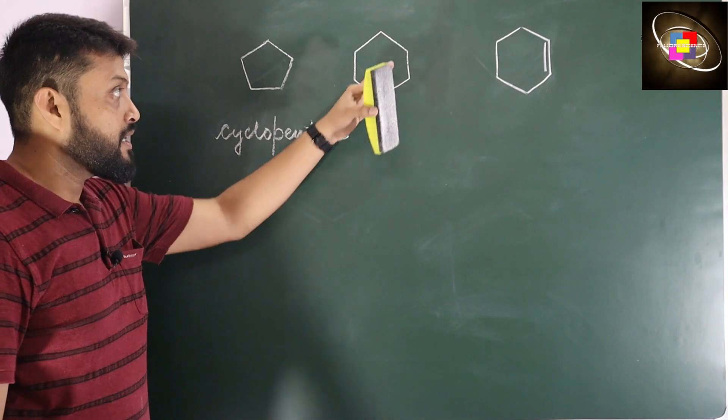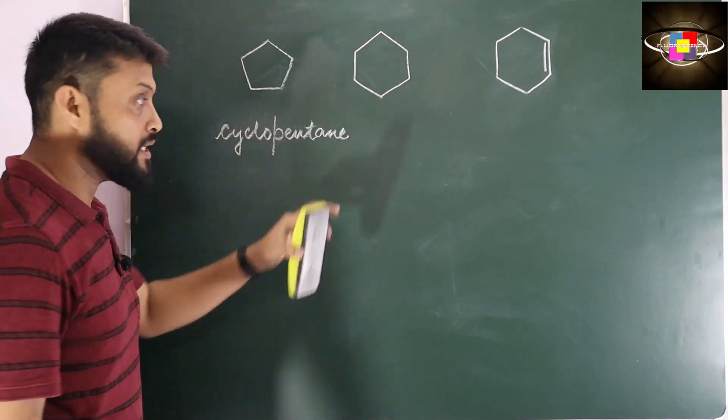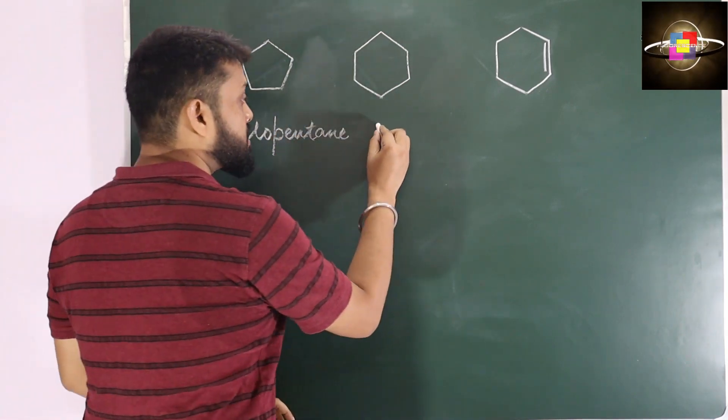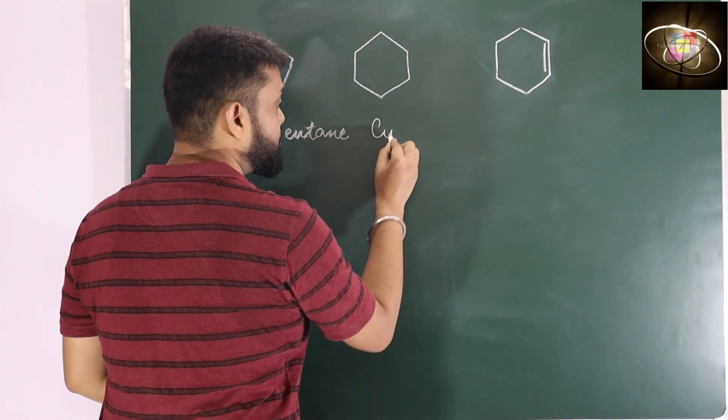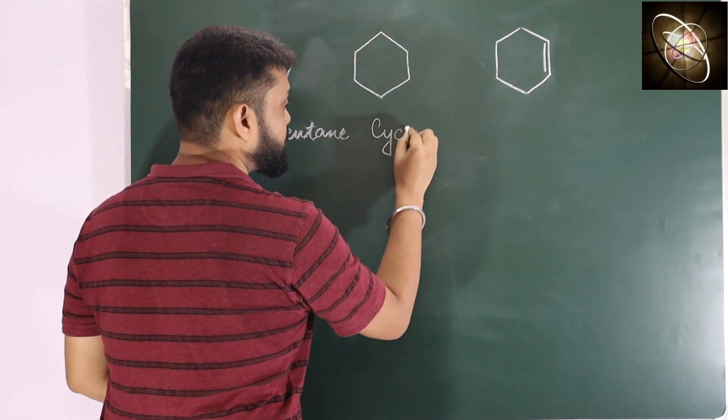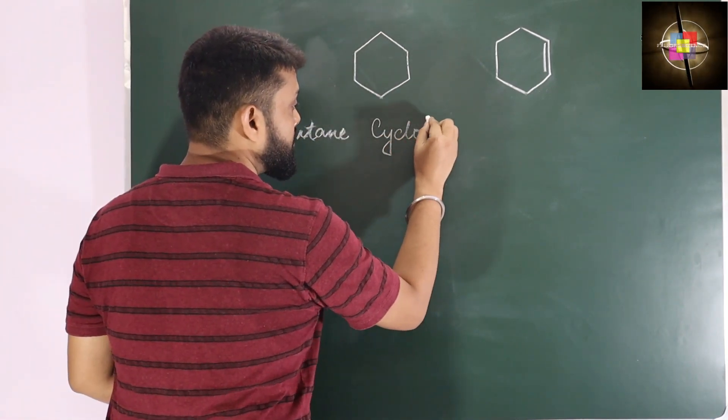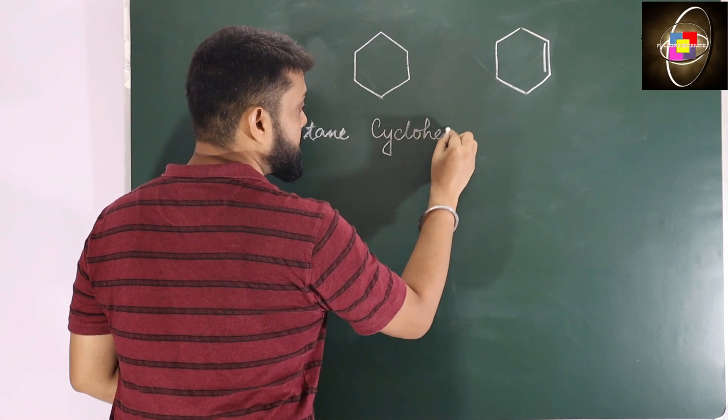This one is a 6-member ring, so it is called cyclohexane.